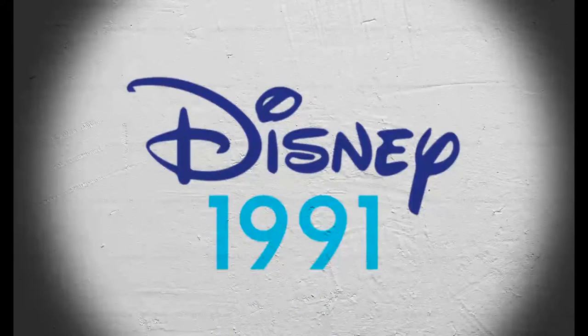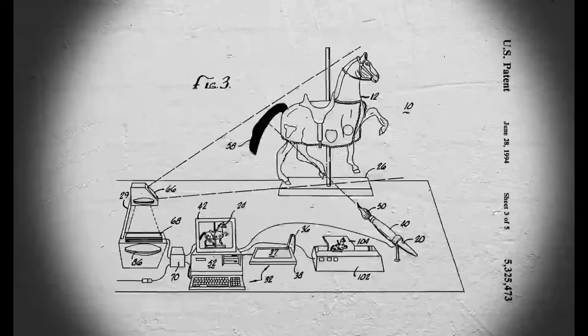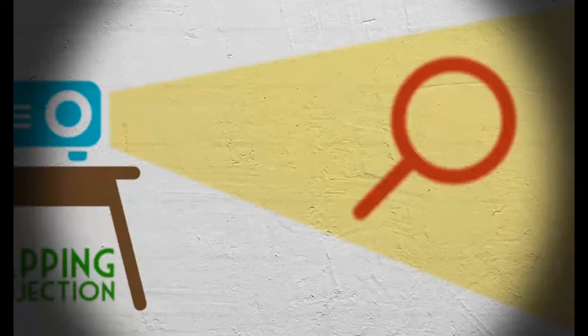Throughout the years, there has been a different approach and development in projection mapping, searching for different applications in different spaces. Thus, in 1991, Disney created the first patent called 'Apparatus and Methods for Projection upon a Three-Dimensional Object,' explaining the system for digitally painting an image onto a 3D object. By this technological breakthrough, a new concept of mapping projection was born, becoming a part of academic research and projects at universities.